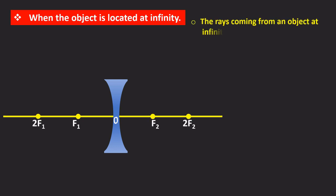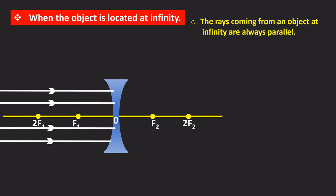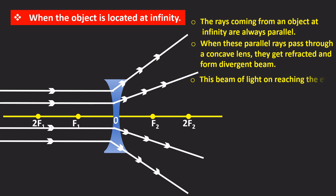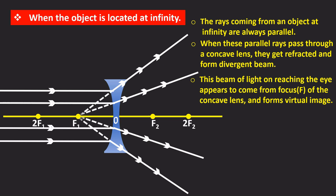The rays coming from an object at infinity are always parallel. When these parallel rays pass through a concave lens they get refracted and form divergent beam.